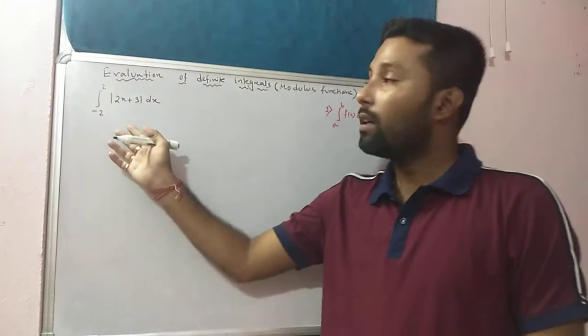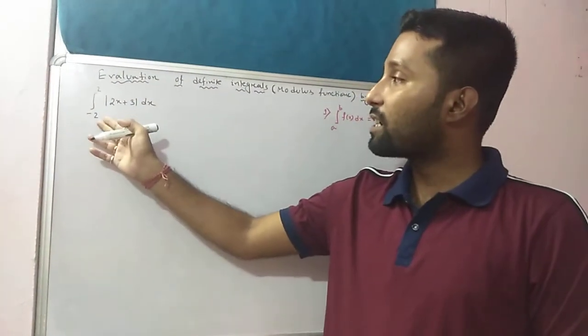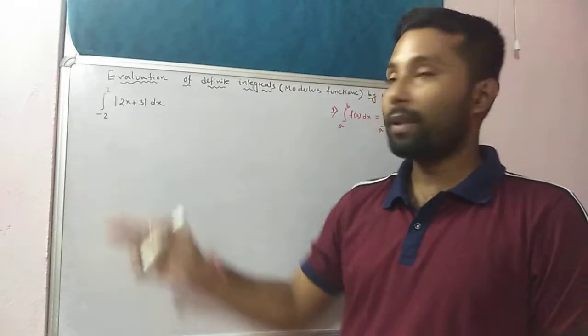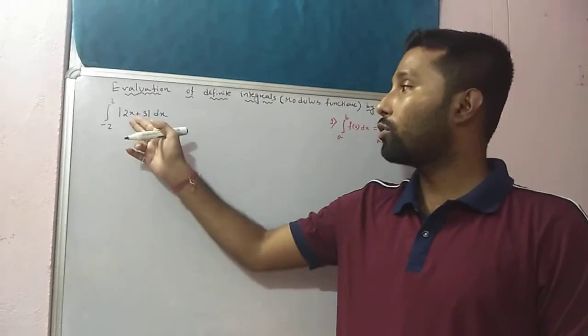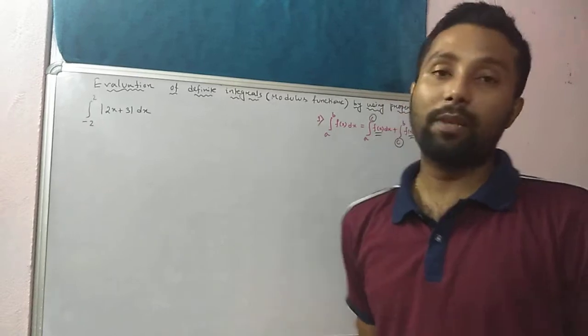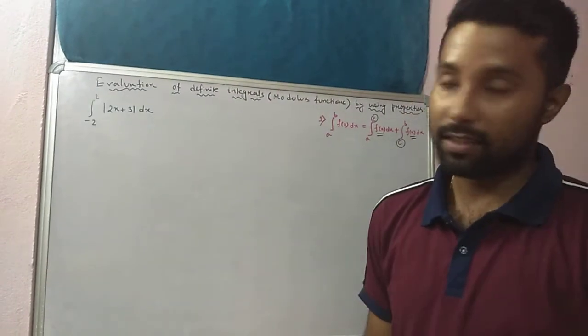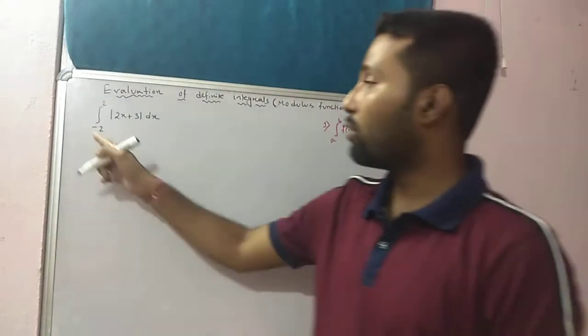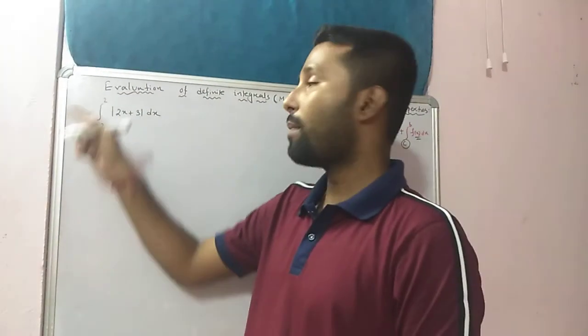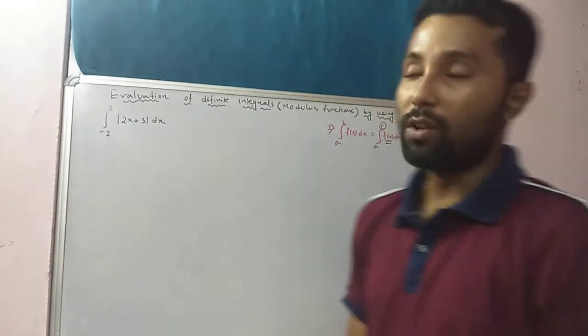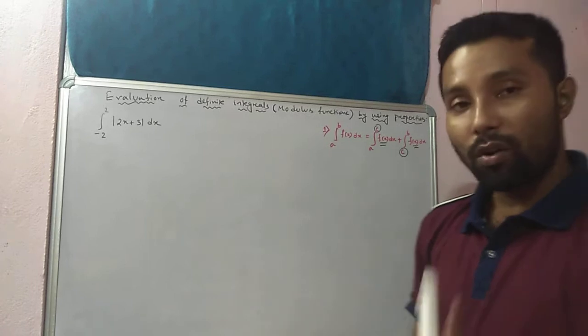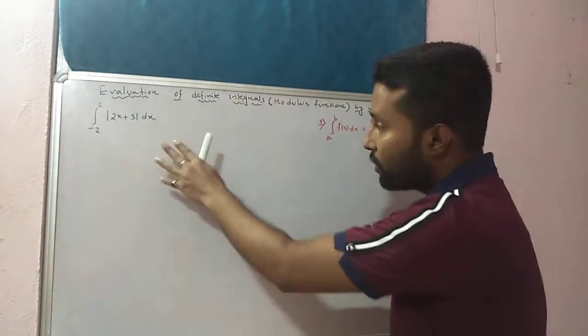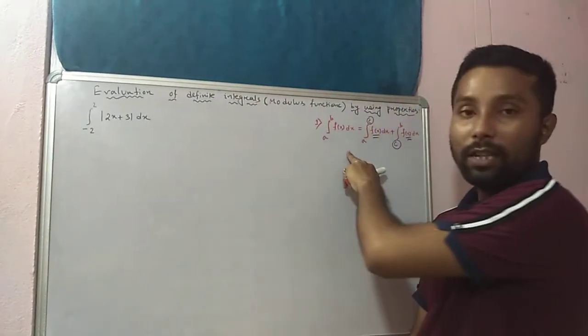Now take the next example: integration from minus 2 to plus 2 of modulus of (2x + 3) dx. Here the lower limit is minus 2 and upper limit is plus 2, so you have to use the splitting property.